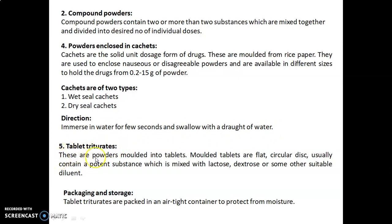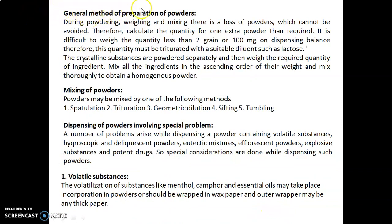The fifth type is tablet triturates — powders molded into tablets. Molded tablets are flat circular discs, usually containing a potent substance mixed with lactose, dextrose, or another suitable diluent. Tablet triturates are packed in an airtight container to protect from moisture. In the general method of preparation, during powdering, weighing, and mixing, a loss of powder which cannot be avoided occurs. Therefore, calculate the quantity for one extra powder than required. It is difficult to weigh a quantity less than 2 grains or 100 mg — one grain equals 60 mg — so this quantity must be triturated with a suitable diluent such as lactose.